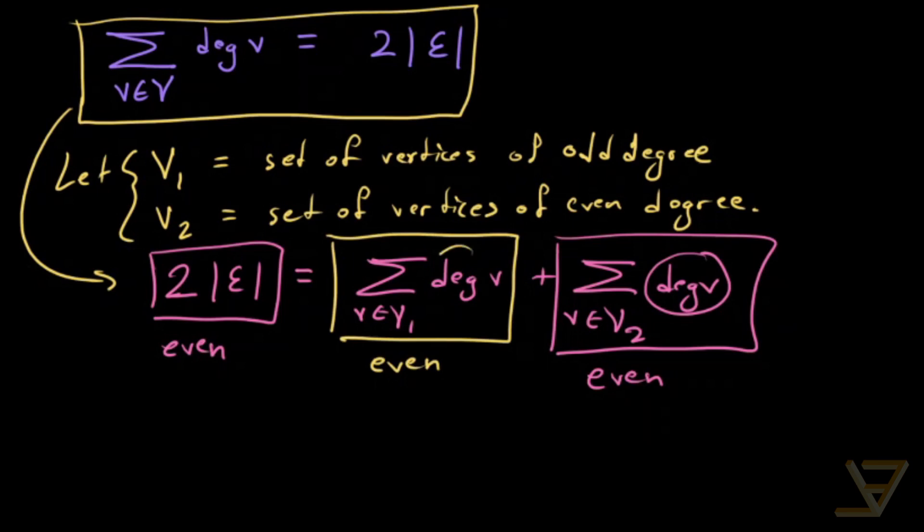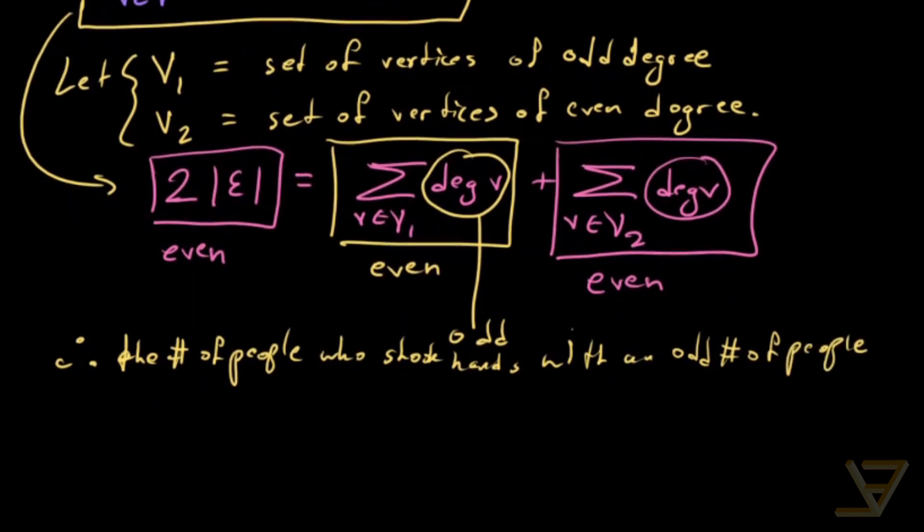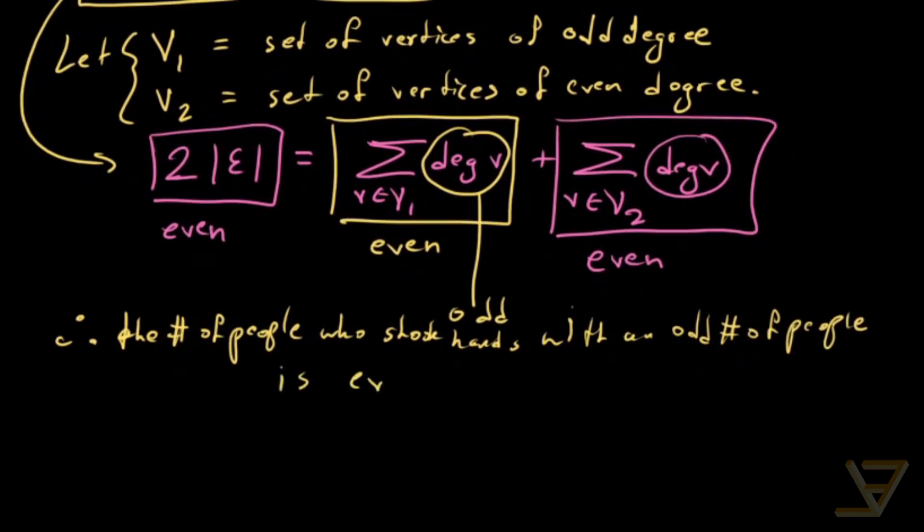And since each of these degrees is odd, there has to be an even number of them. So our conclusion is that the number of people who shook hands with an odd number of people is even. And that's the second handshaking lemma.